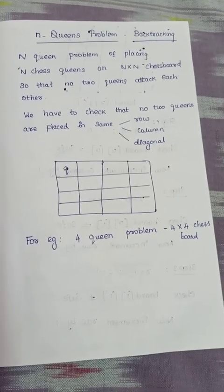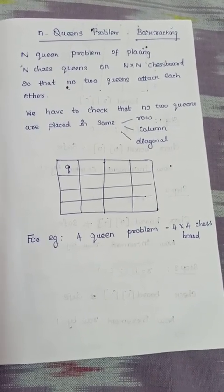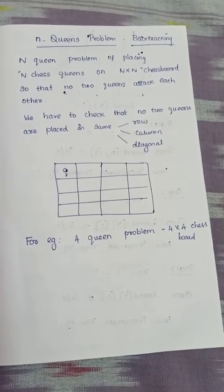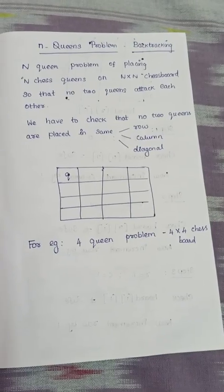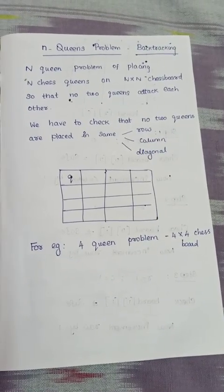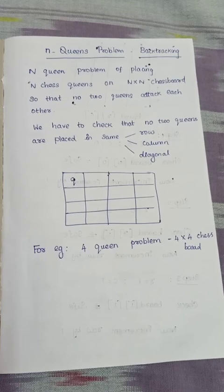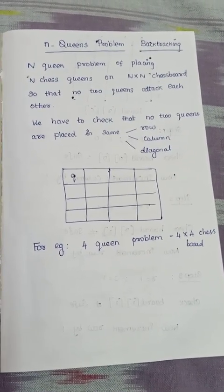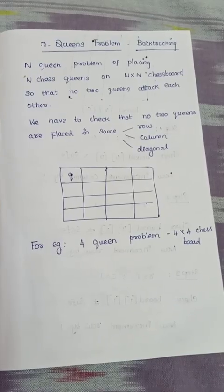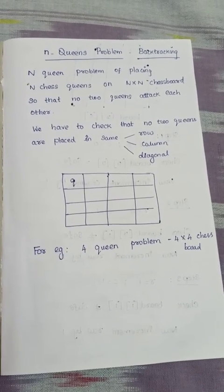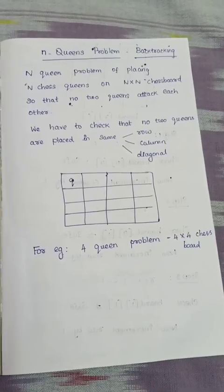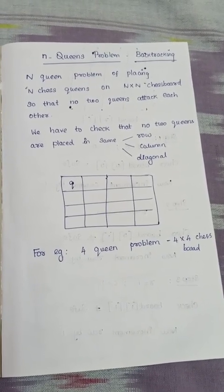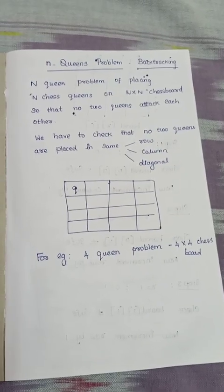We know the chess board. In the N-Queens problem, we need to place N queens on an N×N chess board. For example, with a 4×4 chess board, we place 4 queens such that no two queens are in the same row, same column, or same diagonal.